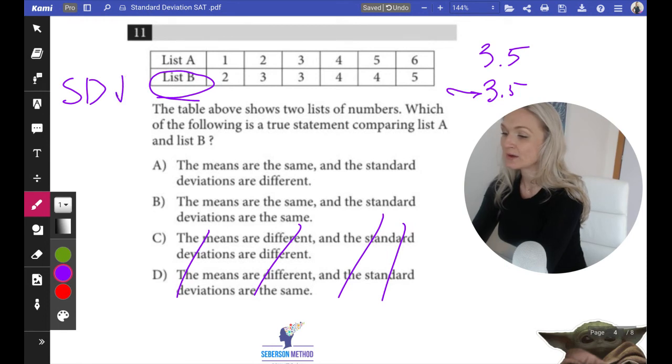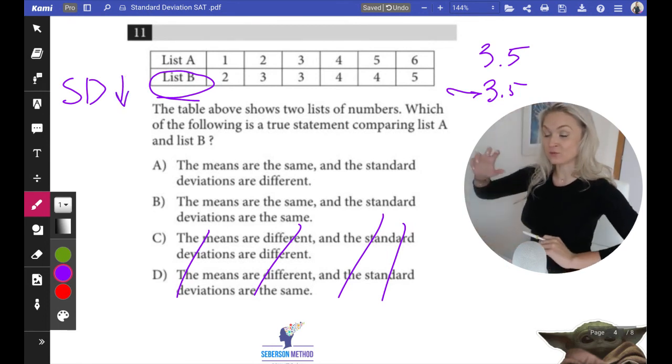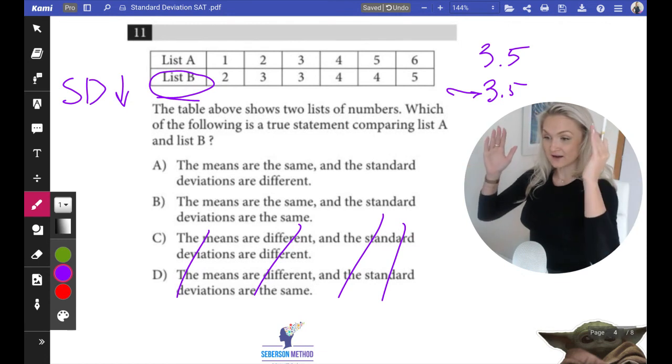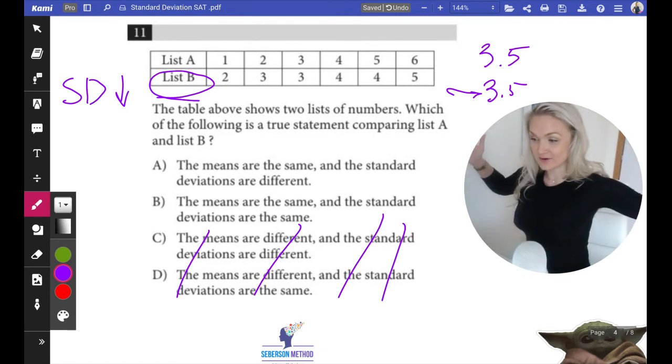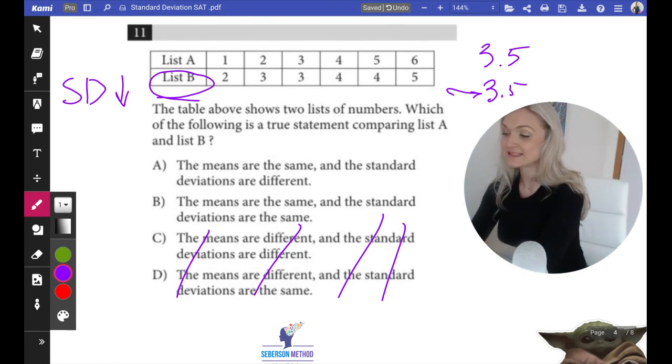And for list A, because it's more spread out, you have one, you have six, and they're further spreading out from 3.5. For list A, the standard deviation is going to be higher.